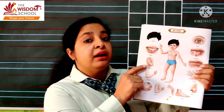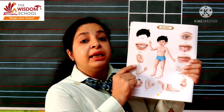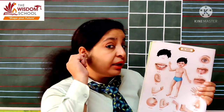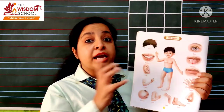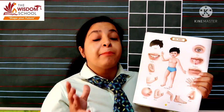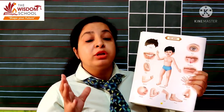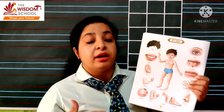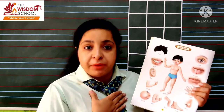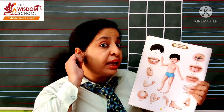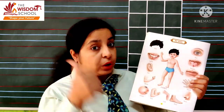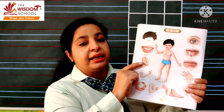Next is ear. Isko bolte hain ear. Yeh hamari ear hai. Isse hum kya karte hain? Sunte hain na? Aapko meri awaaz aa rahi hai na, aap isse sunte rahe ho na? Sunne ko bolte hain hear. We can hear with our ears. Hum apne kaanon se sun sakte hain. Ear — kya hai yeh? Ear.